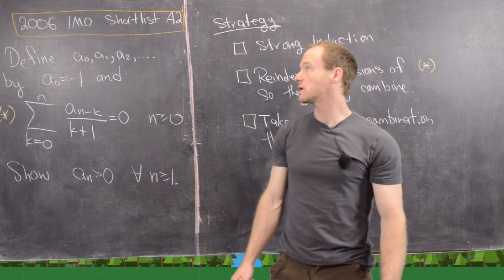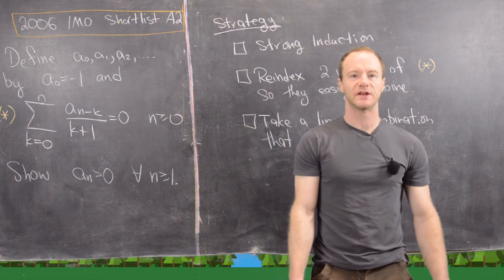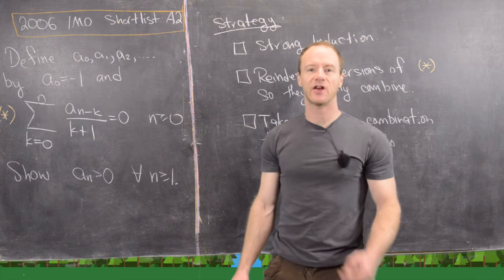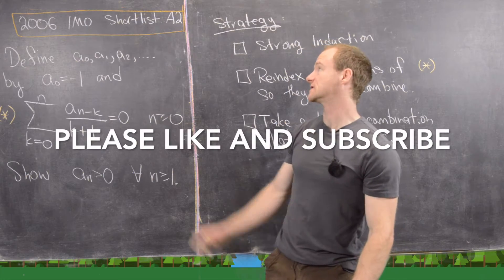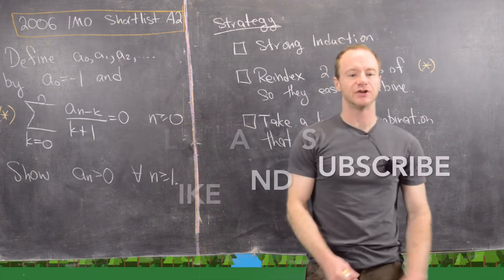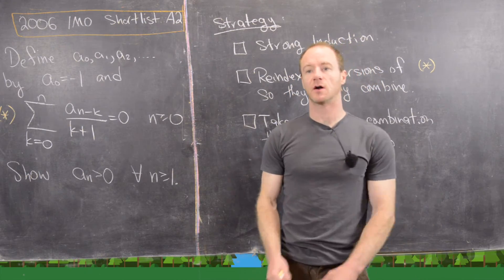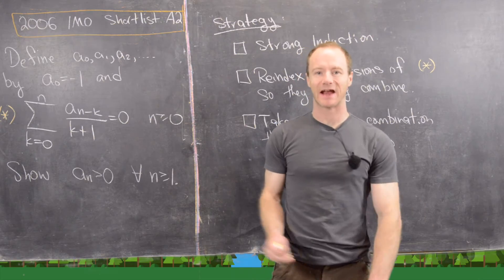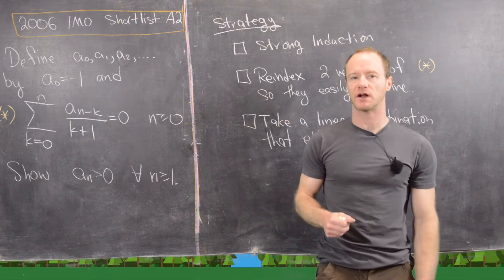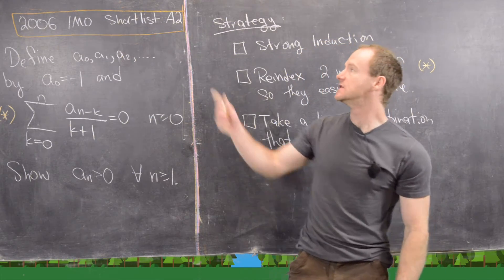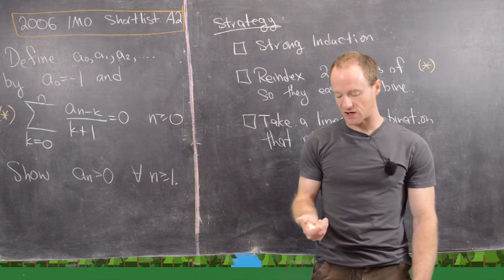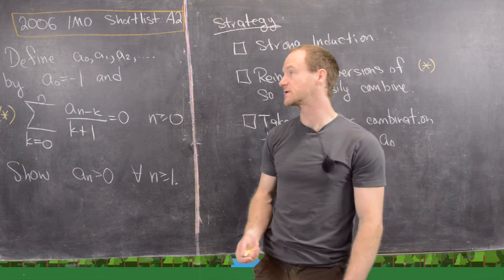In this video we're going to look at a problem from the 2006 International Math Olympiad shortlist. It's problem A2. These shortlists are broken down into categories — algebra, combinatorics, geometry, and so on. So this is the second problem from the algebra category in this shortlist.